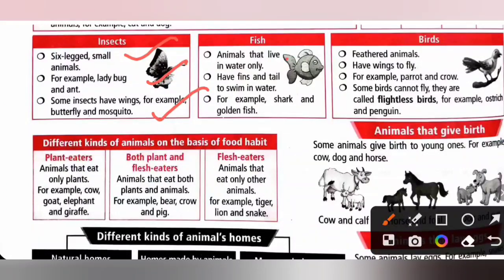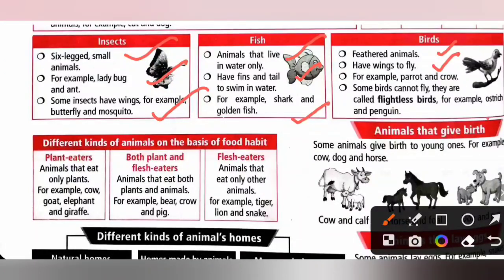Fish is an animal that lives in water only. It has fins and a tail to swim in water, for example shark and goldfish. Birds are animals that have wings to fly, for example parrot and crow.